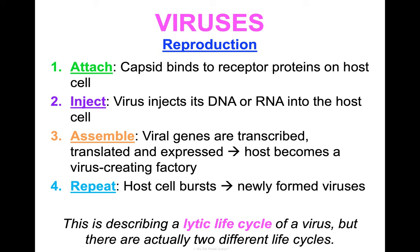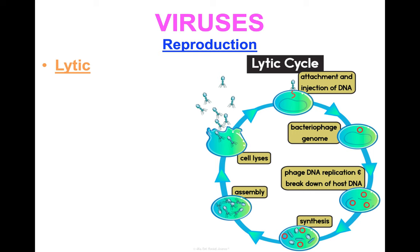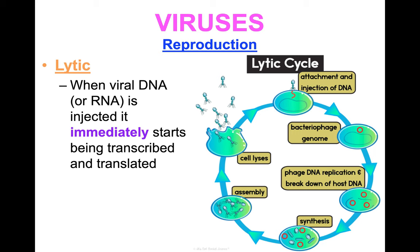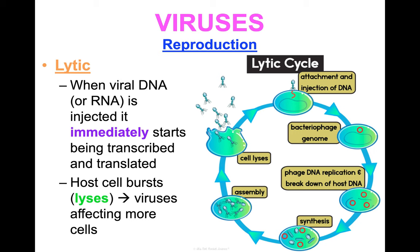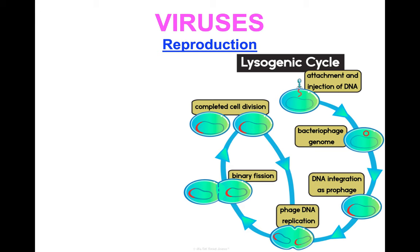There are actually two different life cycles of a virus. The lytic life cycle is when that viral DNA or RNA is injected and immediately starts being transcribed, translated, and expressed. The host cell then bursts or lyses — hence the name lytic — and those viruses are released to affect more cells. This is where a virus is having an immediate impact — I like to think of it as its active life cycle. In this picture, we're looking at bacteriophages, but remember a virus can attach to host cells other than bacteria.